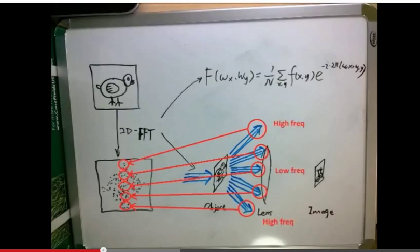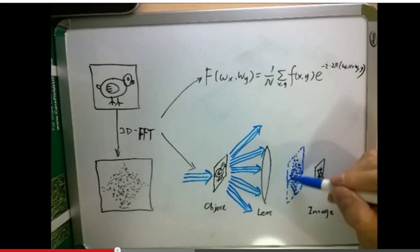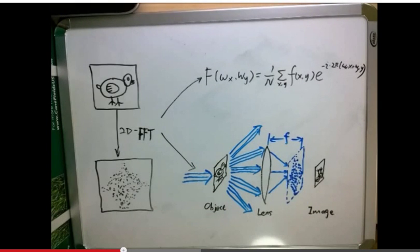Large emitting angles correspond to high spatial frequency. If we put a screen on the post-focus of the lens, the two-dimensional Fourier transform pattern will appear on the screen.